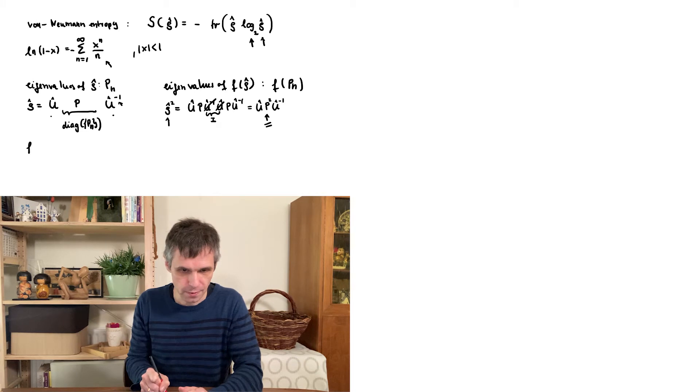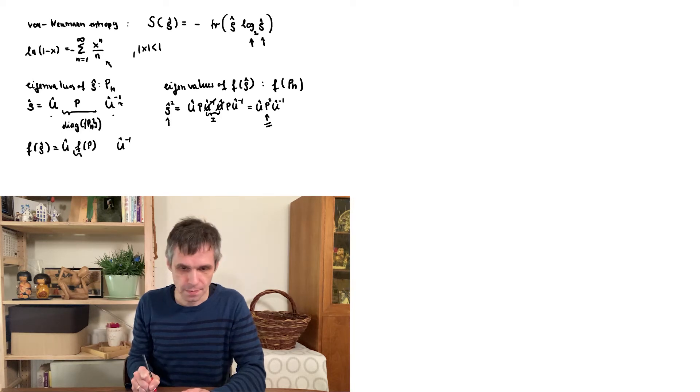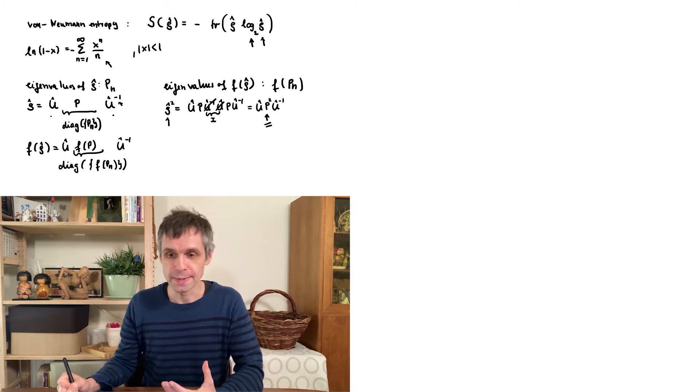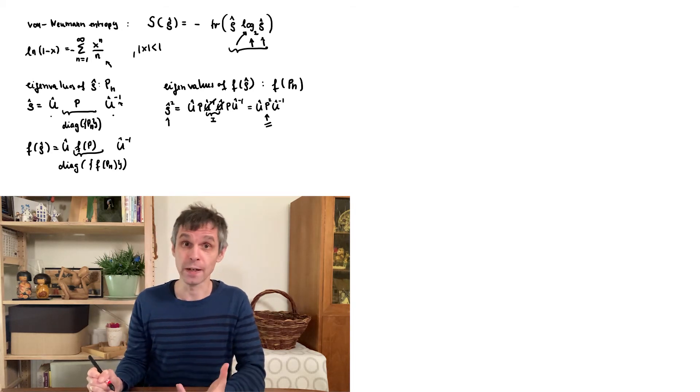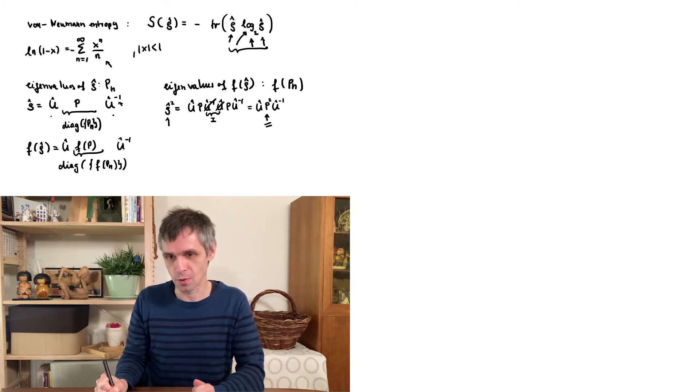So at the end, we can write any function of rho in terms of these matrices U and the diagonal matrix in the middle, which I denote like this. And this is simply the diagonal matrix, which contains the function of the eigenvalues on the diagonal. Okay, so this was simply for completeness. And the upshot is that we know what this logarithm here means. And also what all of this here means, because this is still sort of a function of rho, including this multiplication with rho itself.